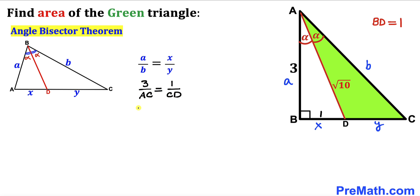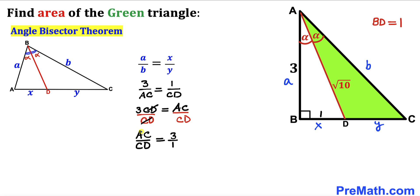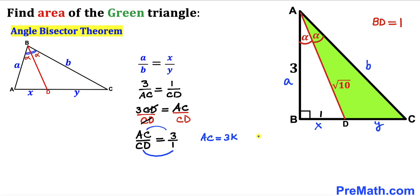Cross-multiplying gives us 3 · CD = 1 · AC, so AC/CD = 3/1. Therefore we can write AC = 3K and CD = 1·K for some constant K, and our task is now to find the value of K.